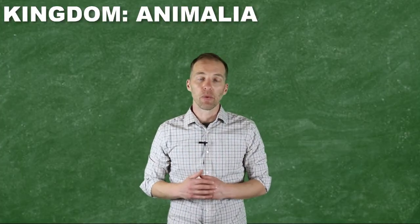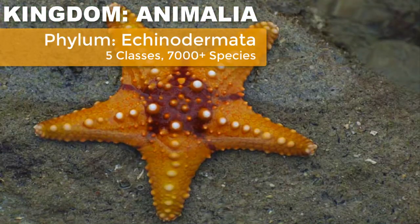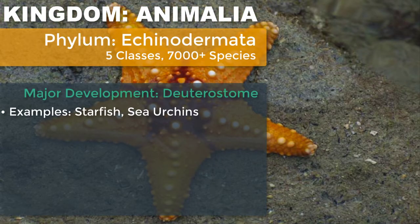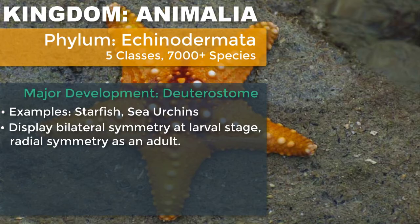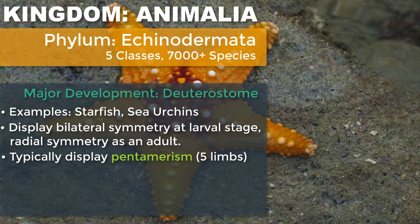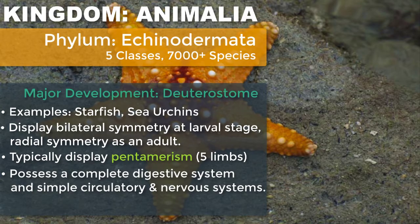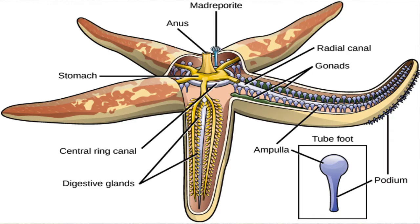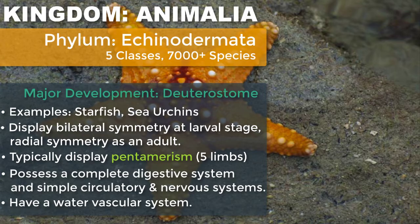The first group of deuterostomes we're going to look at are the echinoderms. Echinoderms encompass a group of organisms that include what we recognize as the starfish or sea star. Even though as adults they display radial symmetry, early on in their embryological development they display bilateral symmetry. As they develop, they typically have five or more arms. They possess a complete digestive system and a relatively simple circulatory system, but no respiratory or excretory systems to speak of. They don't have a head region. Their nervous system typically extends into their arms and circles their mouth. One of the really interesting things about this group is that they have a water-filled vascular system that allows them not only to move but to capture and manipulate prey.